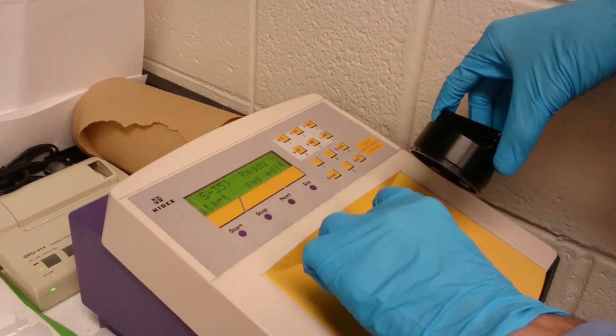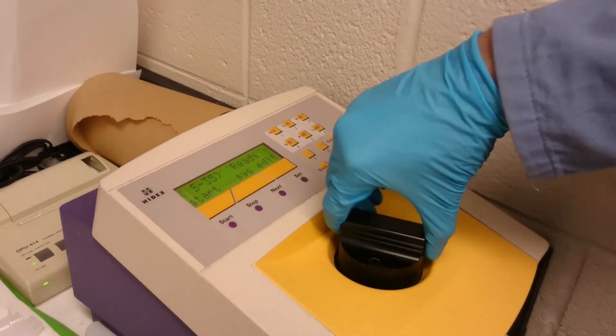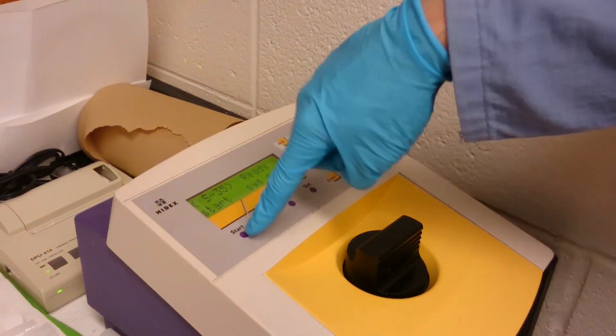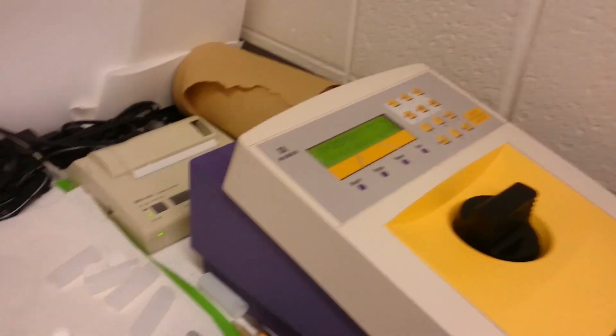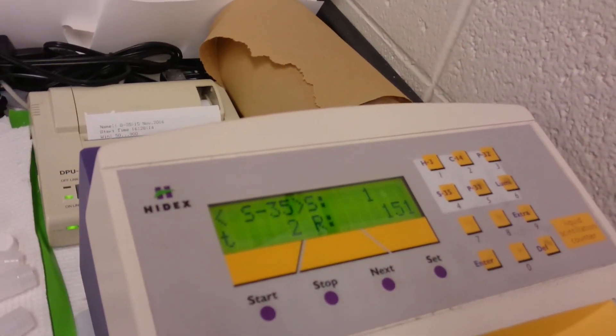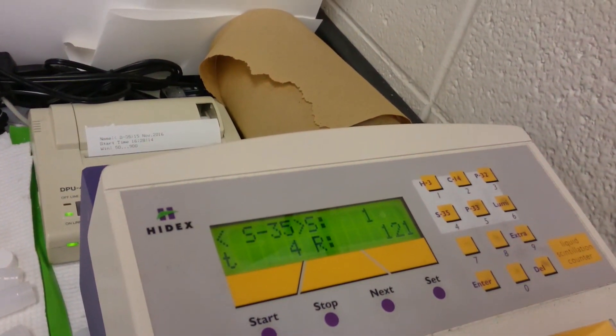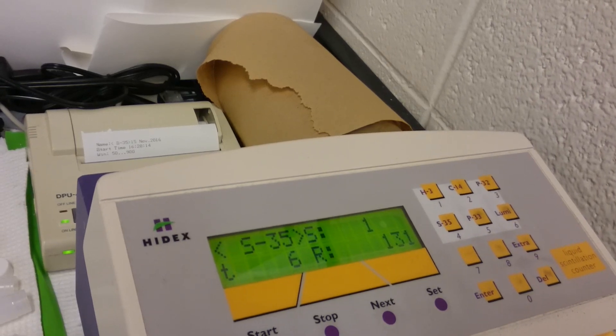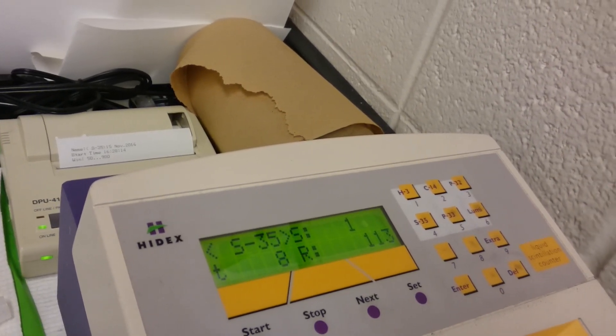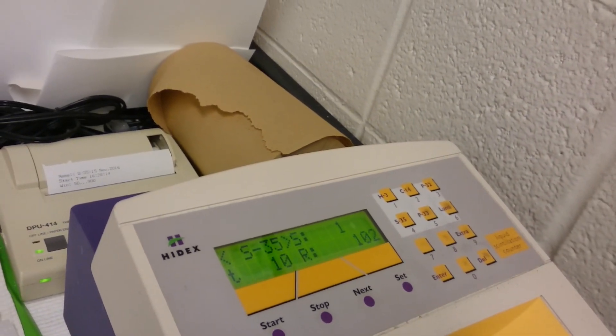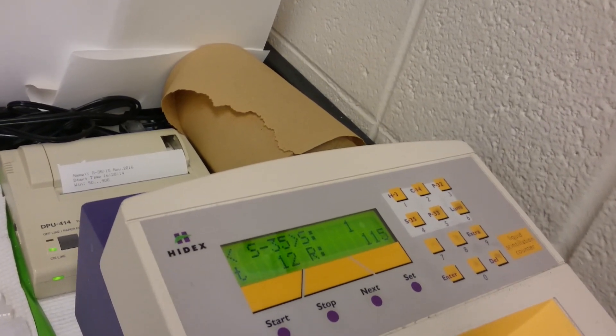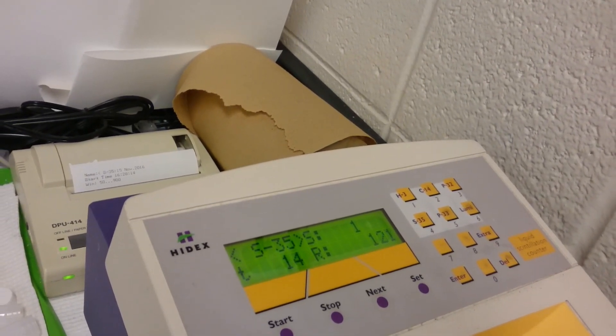So you open this up, put your tube inside the counter, close it, and then press start. It'll count for a full 40 seconds and the background reading for this in our lab is typically around what you're seeing here, between 145 and 180 counts per minute.